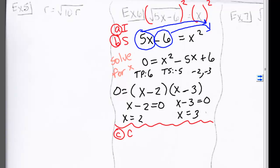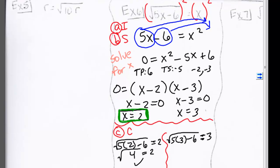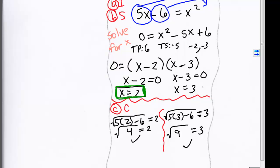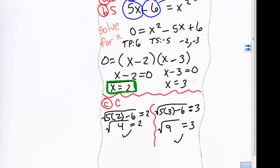Now we need to check both solutions. When I plug in 2, I get a true statement, therefore x equals 2 is an answer. When I plug in 3, I also get a true statement, therefore x equals 3 is also an answer.